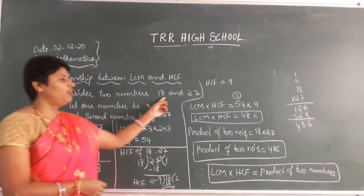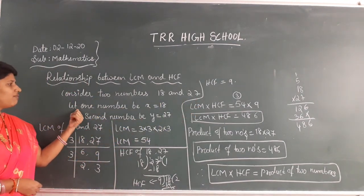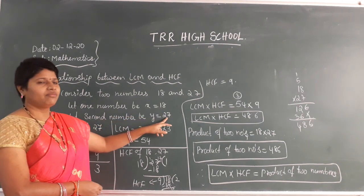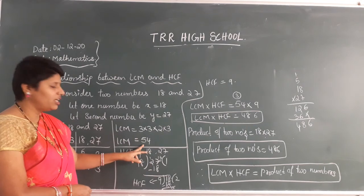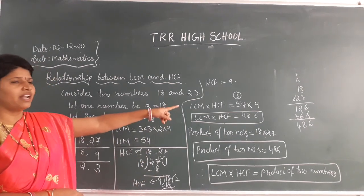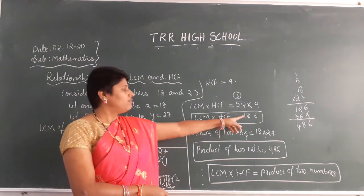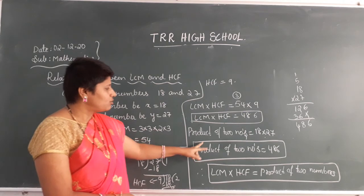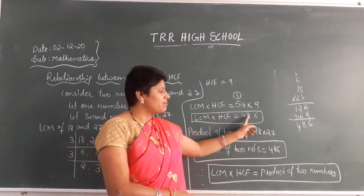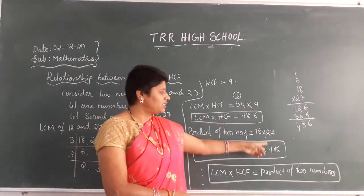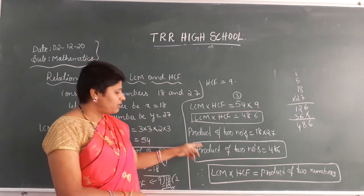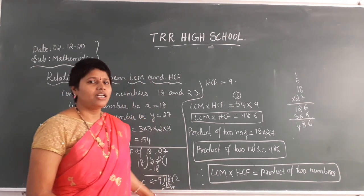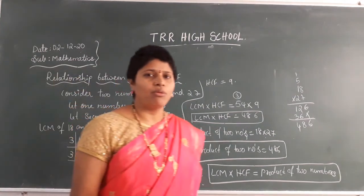Once again, let me explain. I have taken 2 numbers: x equal to 18 and y equal to 27. I found the LCM of 18 and 27, which is 54. And HCM is 9. LCM × HCM gives 486. And the product of the 2 numbers, 18 × 27, also gives 486. Since 486 equals 486, I can say LCM into HCM is equal to the product of 2 numbers. This is your clear relationship. Write it down in your notebook and we will discuss one more problem.